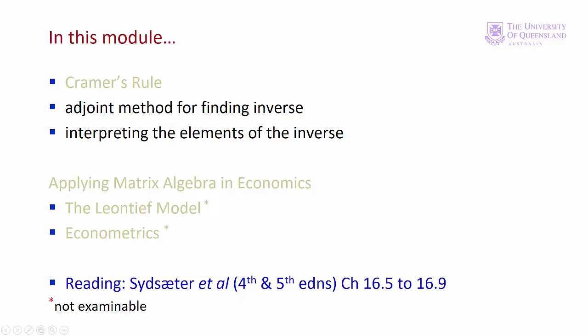In module 2, we've studied the final method for solving a set of equations that we deal with in this course. That method involves finding the inverse using the determinant and cofactors of the matrix of coefficients. This is known as the adjoint method. We'll also see how the inverse of the matrix of coefficients can be interpreted to give us some useful information about the system of equations. We'll finish the module by briefly looking at geometric interpretations of matrices and inverses.